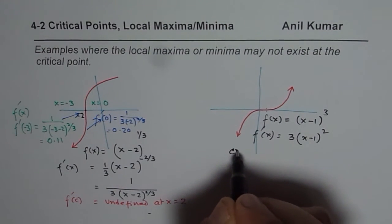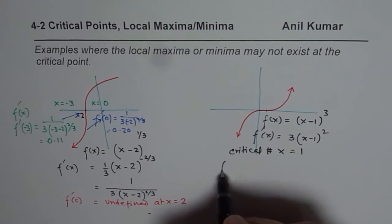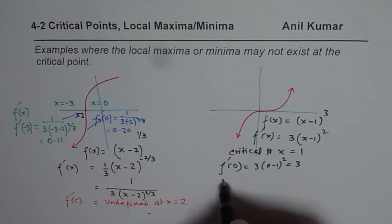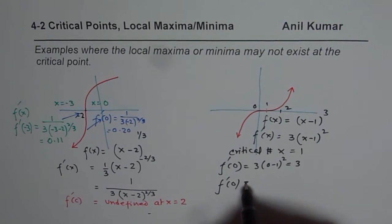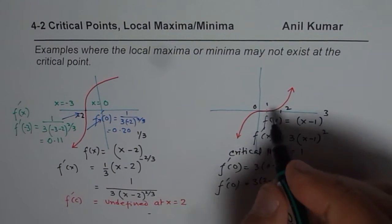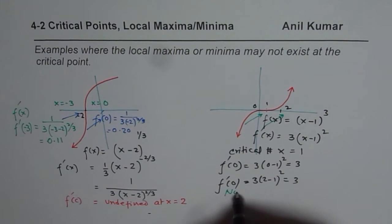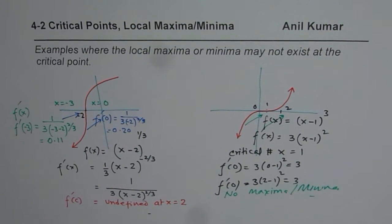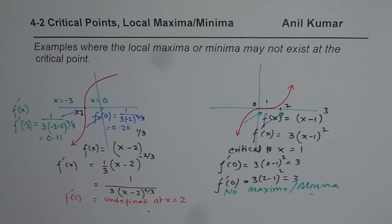Clearly the critical point is at x = 1, where the derivative is 0. Now if you take the derivative at x = 0 on the left: f'(0) = 3(0 - 1)^2 = 3, which is positive. And if you observe the derivative on the right side of 1, say at x = 2: f'(2) = 3(2 - 1)^2 = 3, also positive. The derivative is positive on both sides, meaning the function is increasing on both sides of the critical point — so we have no maxima or minima.